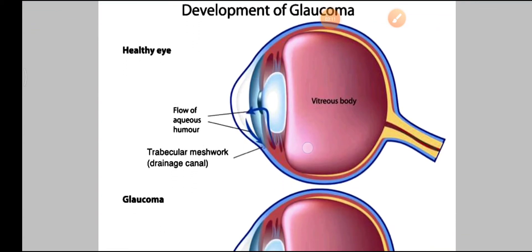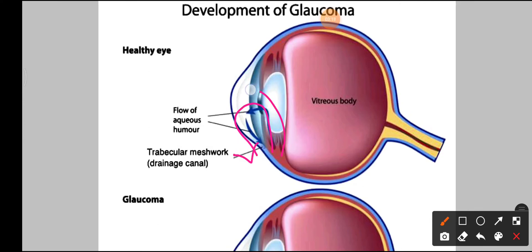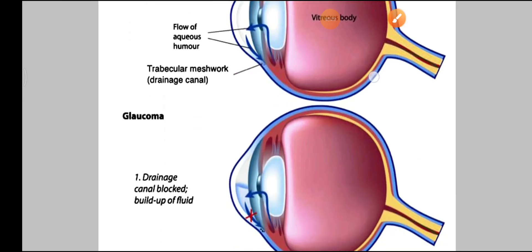How glaucoma is developed: in the normal eye, we know that the pathway of drainage is functioning normally and continuously, so no pressure or no extra pressure is built on the vitreous body.